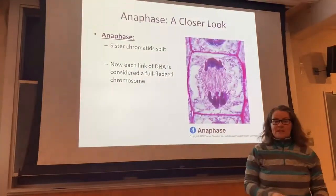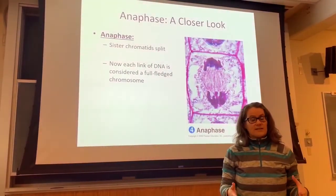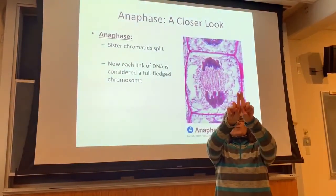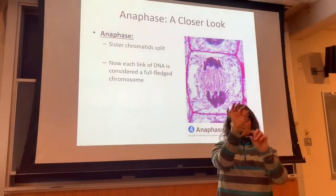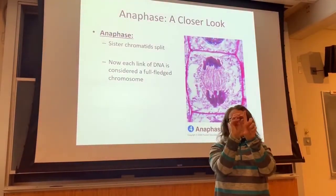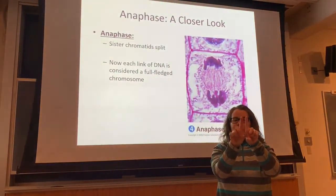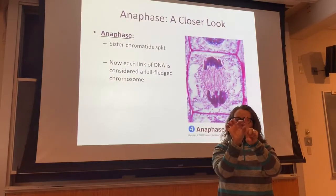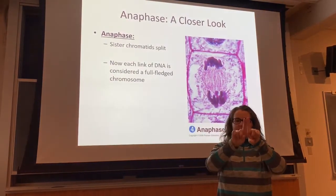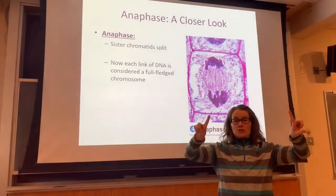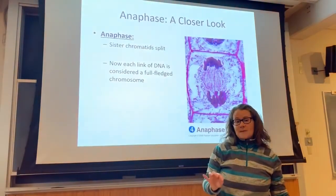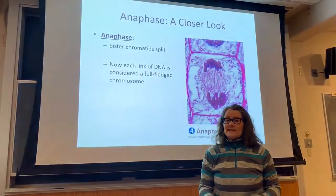Anaphase is probably one of the shortest phases for a cell. In anaphase, your sister chromatids simply split. That sticky protein centromere that held the sisters together is targeted by an enzyme that pinches and squeezes it so that the sisters can separate. That's what happens in anaphase.